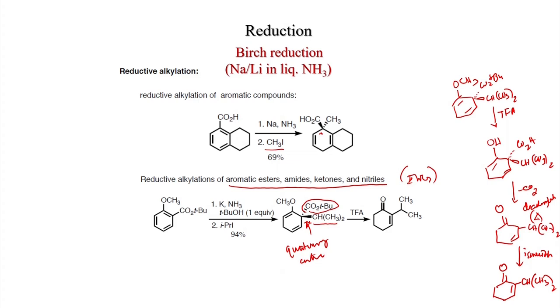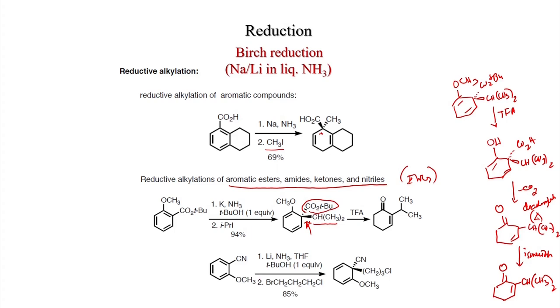With a cyano and methoxy substituted compound treated with lithium in ammonia/THF and tert-butanol (one equivalent), followed by 3-chloro-1-bromopropane, the substitution happens at the electron-withdrawing cyano carbon. Since bromine is a better leaving group than chlorine, the product retains a chloro substituent.